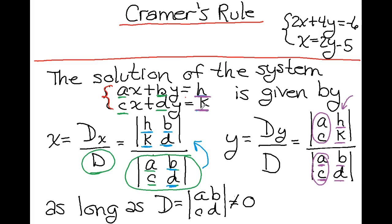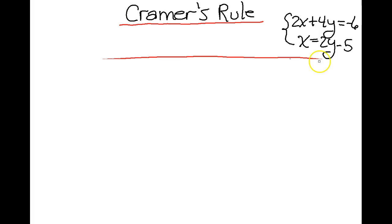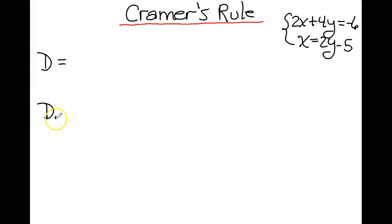You should probably put this in your notebook so that you can refer to it while you're doing your homework. Pause the video and write it down if needed. We are now going to take a look at the example in the top right-hand corner and actually use Cramer's Rule to find the values of x and y. The very first thing I do is calculate all three determinants: D, D sub x, and D sub y.